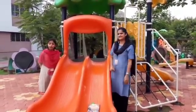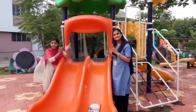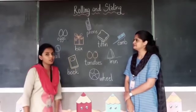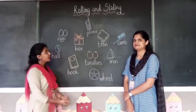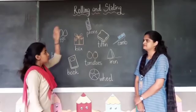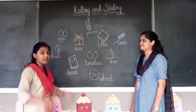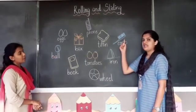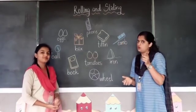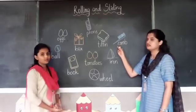So children, the objects which have a flat surface, which have a plain surface, slide. Now we are going to do a short activity. Can you see the pictures here? We are going to circle the objects that slide. Are you ready? Let's begin. I can see a picture of a comb here. Comb has a flat surface — so will it roll or slide? It will slide. So I am going to circle the comb.